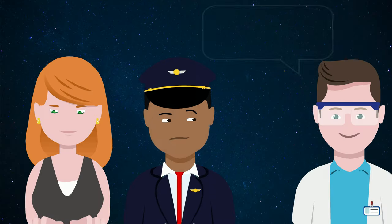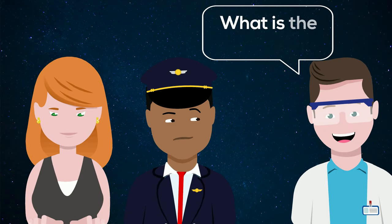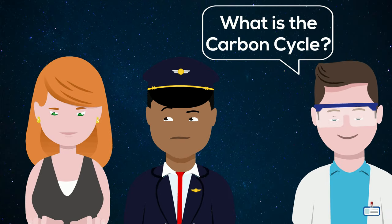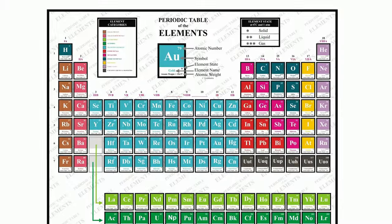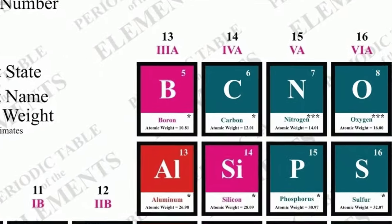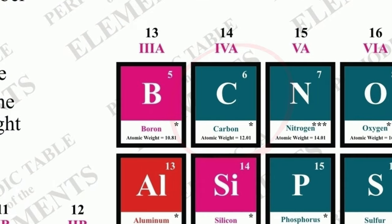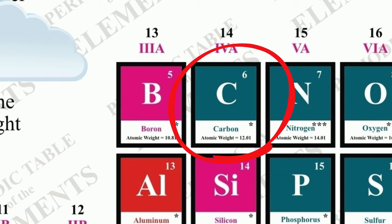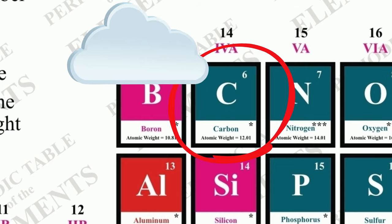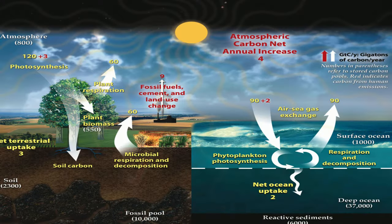Welcome to MooMooMath and Science and the Carbon Cycle. Carbon is an element that is vital to most living organisms on Earth, and it is also a key component of our atmosphere. Carbon has the ability to cycle through our Earth, the ocean, living factors, abiotic factors, and the air.